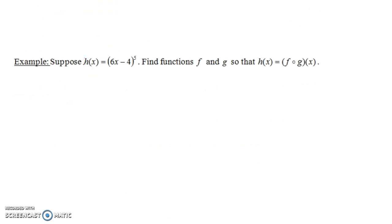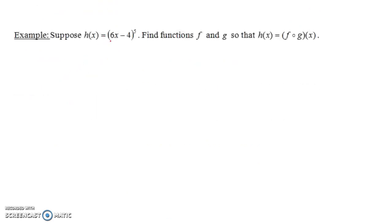Suppose h of x is the 6x minus 4, all of that raised to the fifth power. And again, same directions, find functions f and g so that h equals f of g of x. So again, the g, the way we've written this here, the g is the inside function.